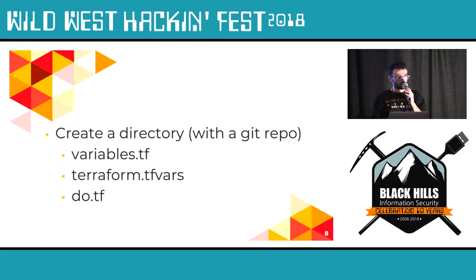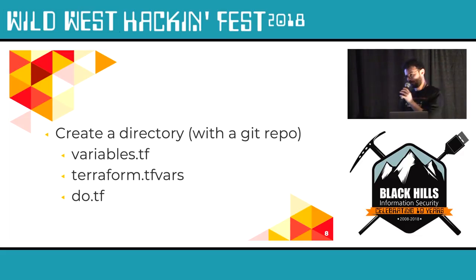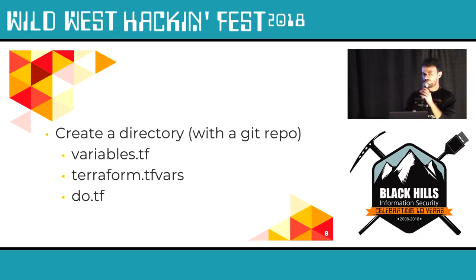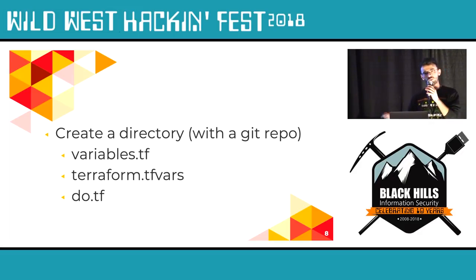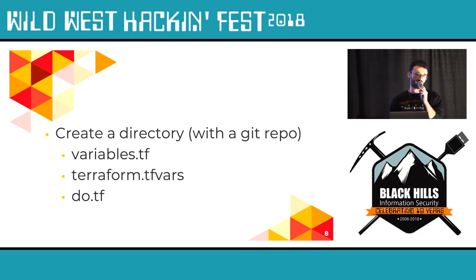Getting started with Terraform is much simpler than you'd expect. You create a directory — preferably with a Git repository, since it is code after all. You'll have a variables.tf where you put all your variables, a terraform.tfvars file where you define values for those variables, and then a do.tf. In this presentation we're interacting mainly with DigitalOcean because it's very simple to understand, though the last file can really be renamed anything you want.